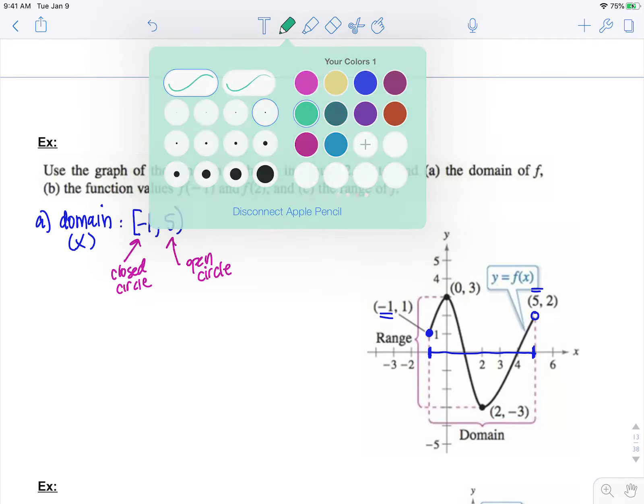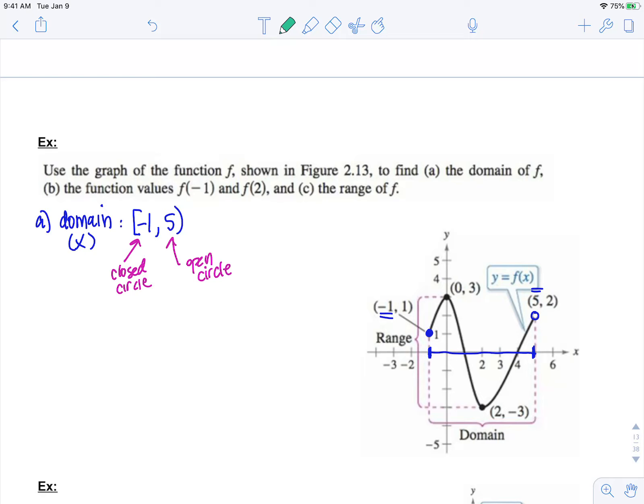Now that we have this graph, we can use a graph to find function values. So part b is asking us to find f of negative 1. Now remember that's just asking us to find the y value at x equals negative 1. Well at x equals negative 1, y is 1.